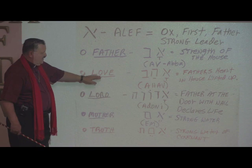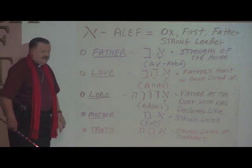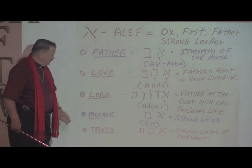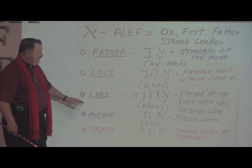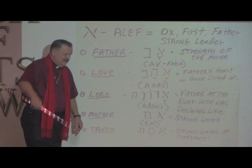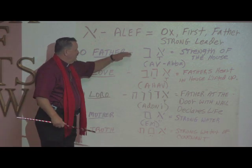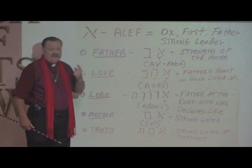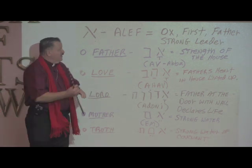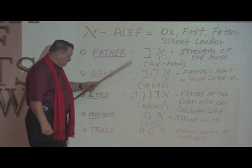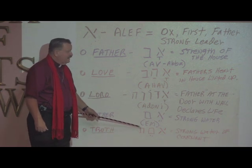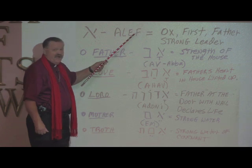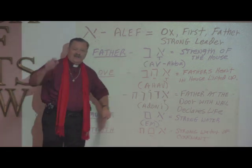The word love — the Father's heart in the house is lifted up so everybody else is lifted up. Come on men, it's time to lift up the heart of God where you live in your house. And Adonai — the Father at the door with the nail is declaring life. There are 22 letters in the Hebrew alphabet. The first one is Aleph and the last one is Tav. And Tav means covenant. If you follow after the father like the ox, he will plow up your ground and he will always lead you to covenant. Aleph to Tav.